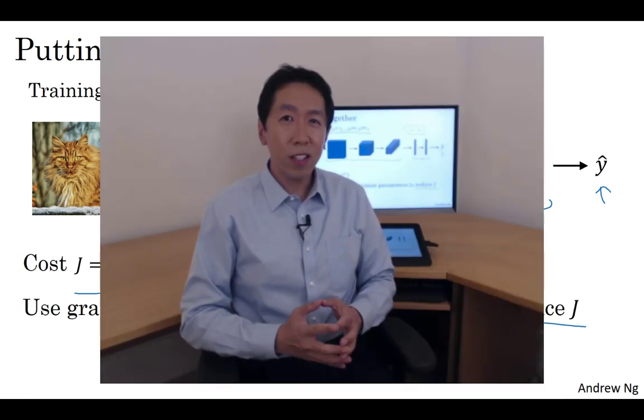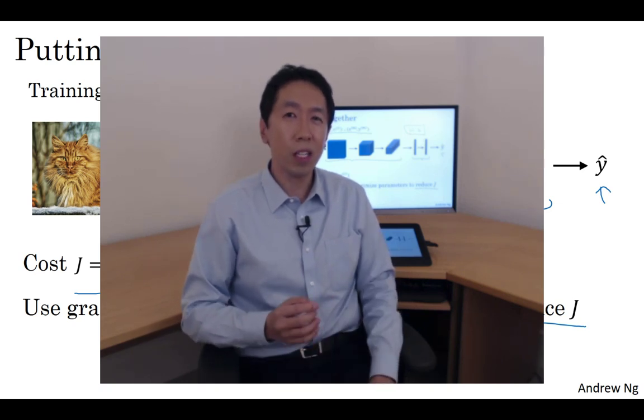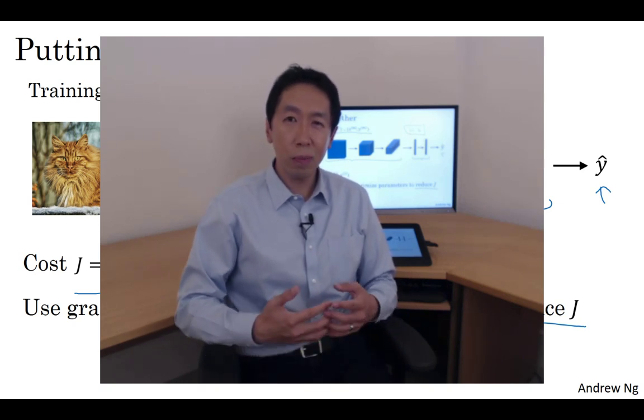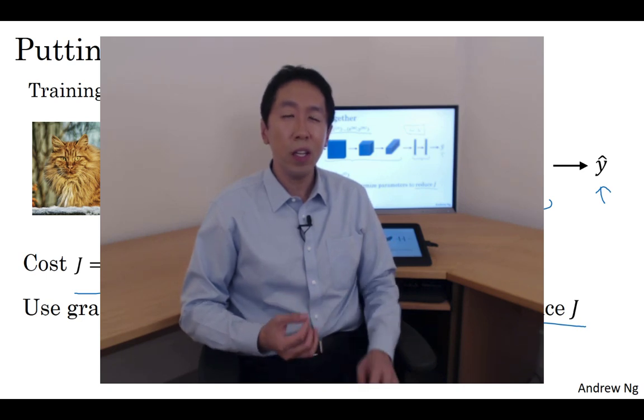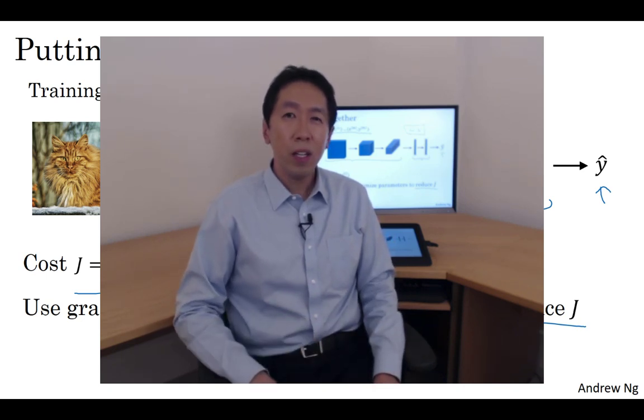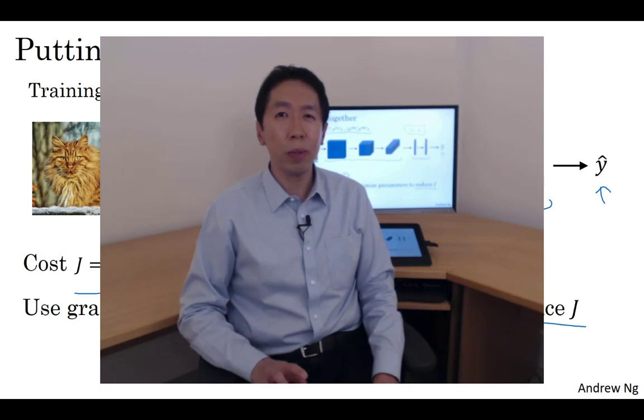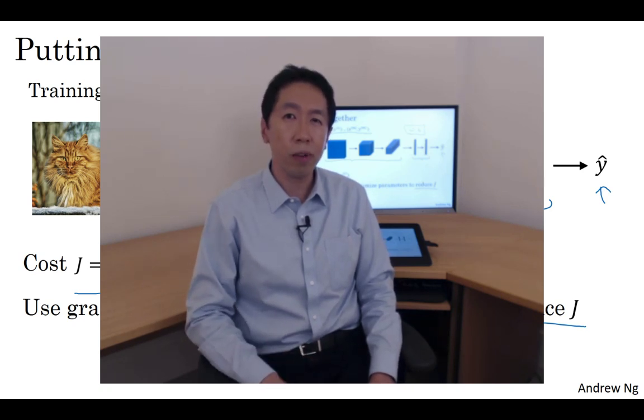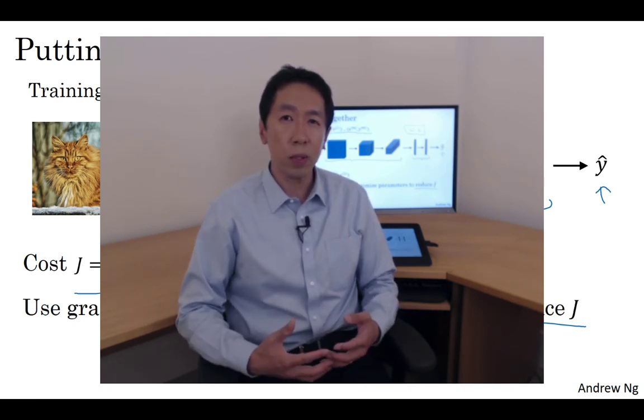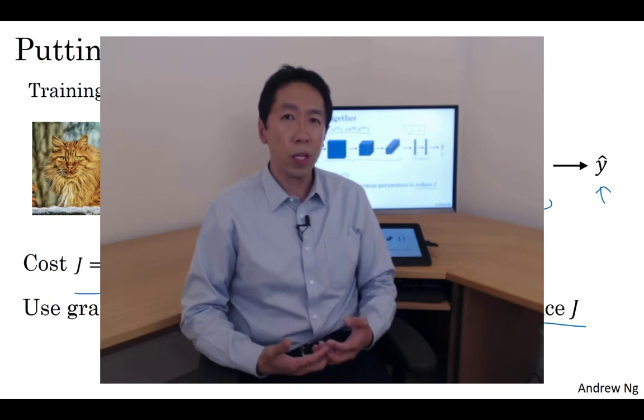So congratulations on finishing this week's videos. You've now seen all the basic building blocks of a convolutional neural network and how to put them together into an effective image recognition system. In this week's program exercises, I think all of these things will become more concrete and you get the chance to practice implementing these things yourself and seeing it work for yourself.